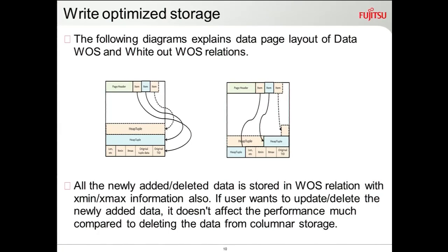The WOS stores the TID because it is implemented with an indexed approach — it stores the original table TID and the heap tuple data, which is the columns that are part of the index. The whiteout relation is just to store deleted data. If a record present in ROS is deleted, that information is stored in the whiteout_OS without touching the ROS. If a transaction rolls back, we just clean it up instead of touching the ROS.